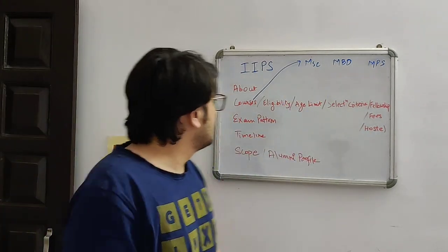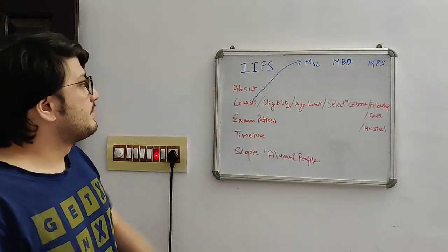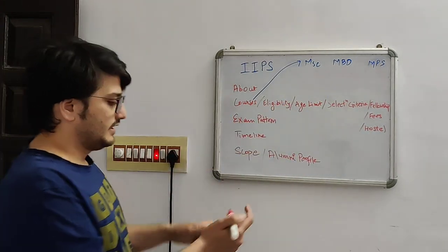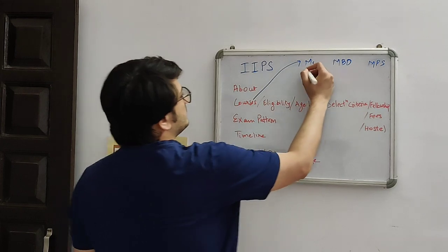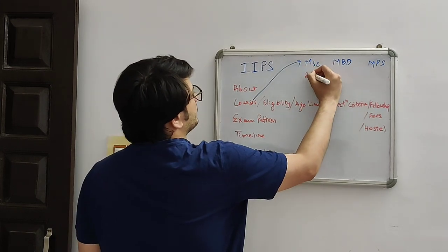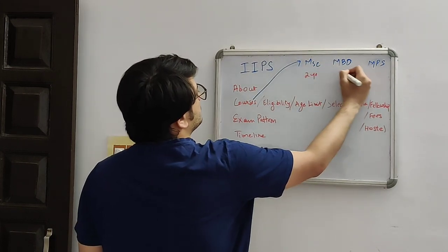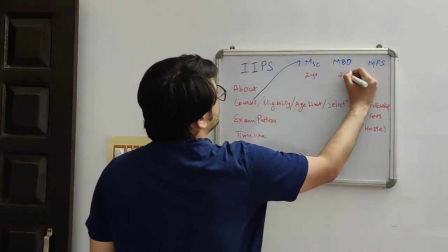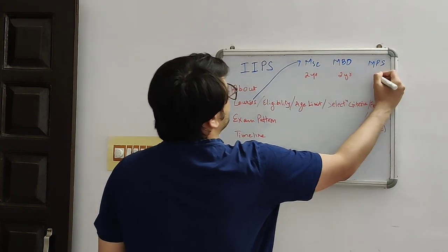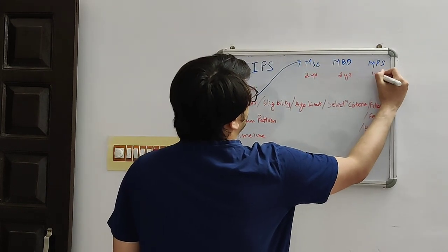Here we have 3 courses. If we talk about duration: MSc is a 2-year program, MBD is also a 2-year program, and MPS is a 1-year program.